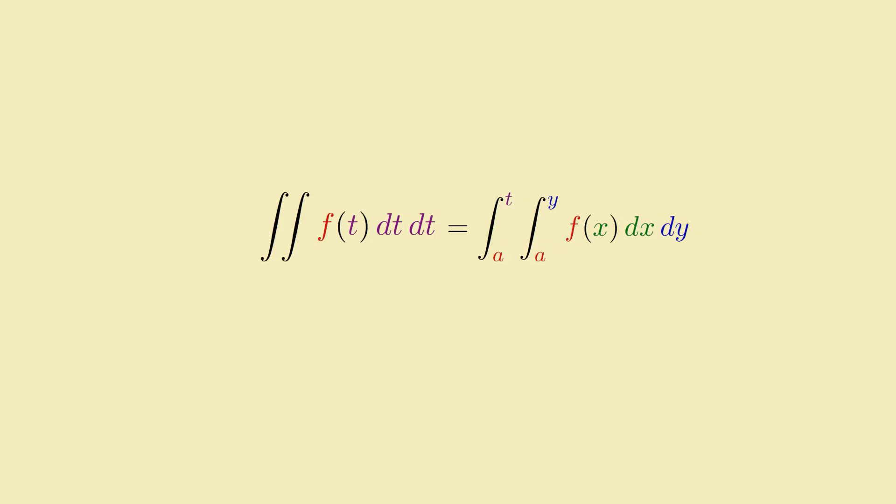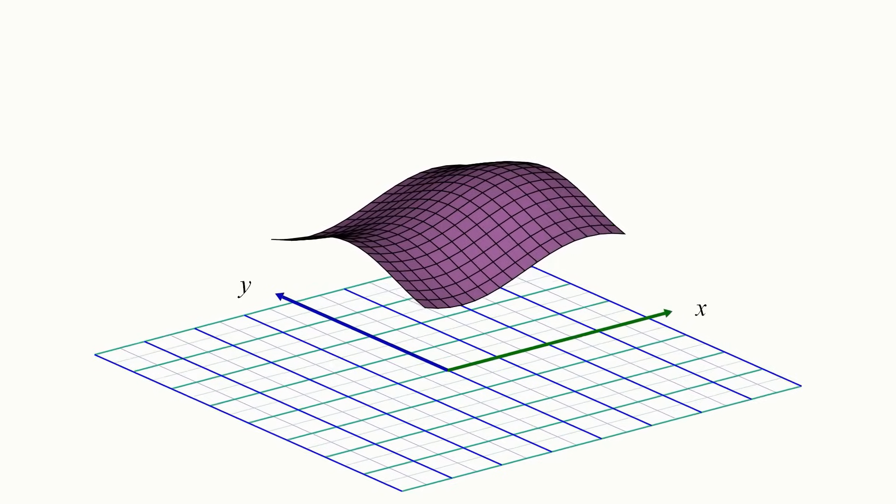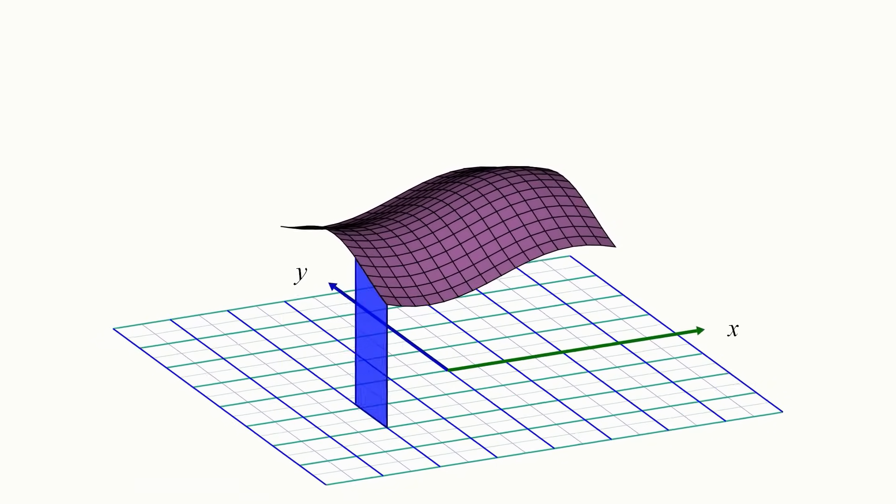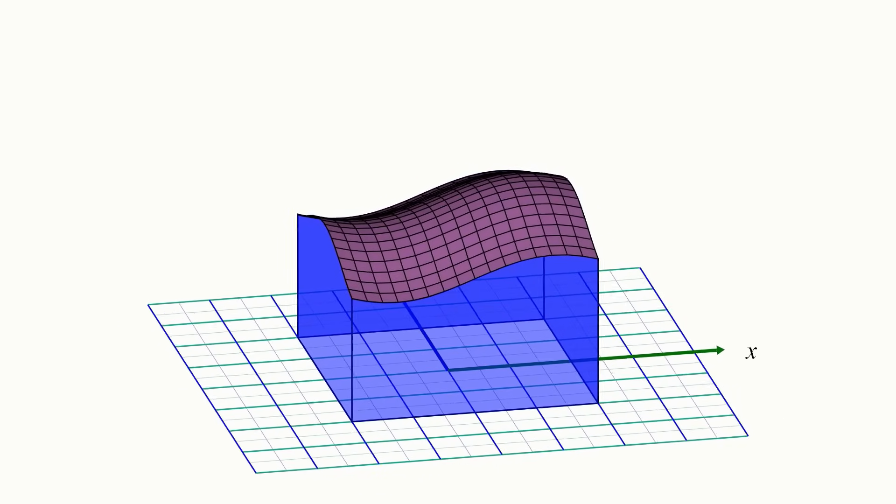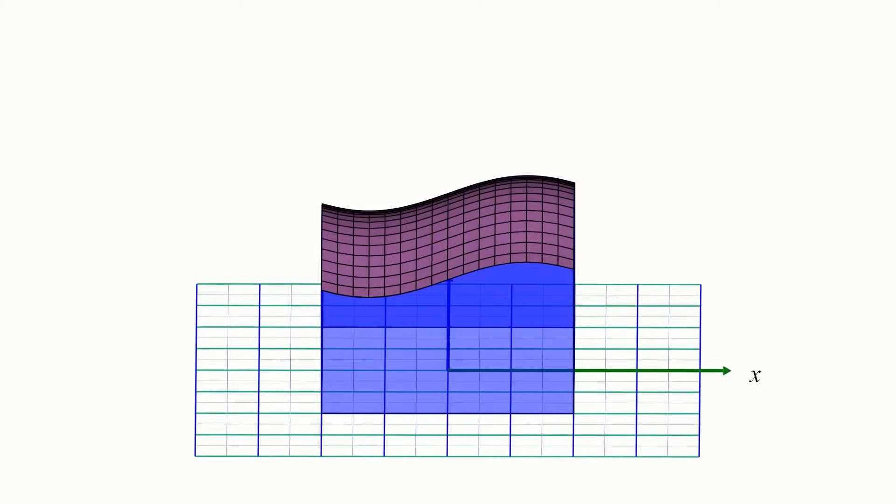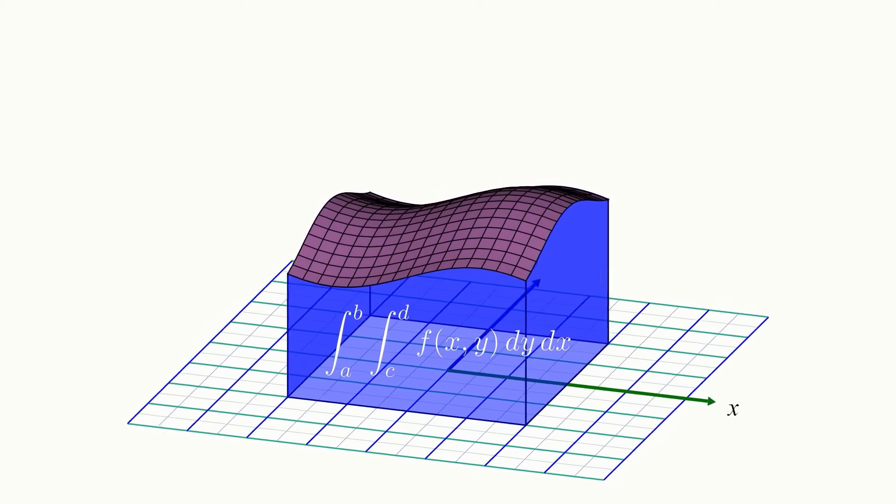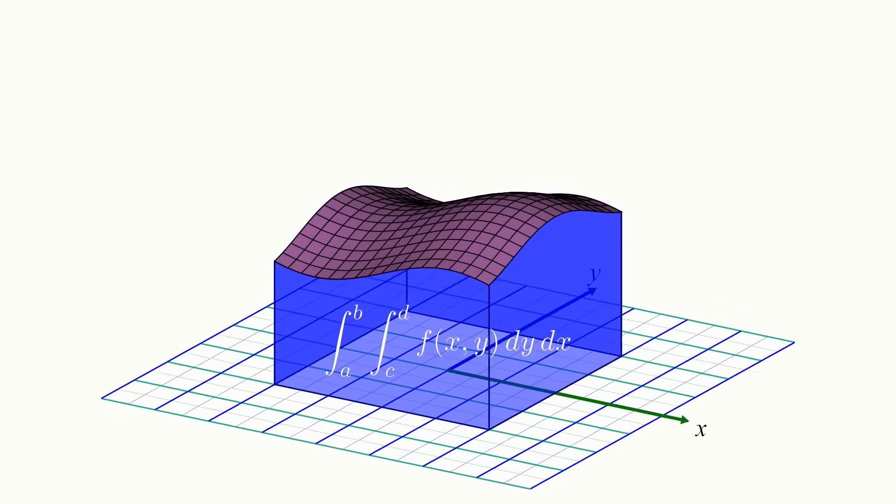Those of you who have had multivariable calculus might see where this is going. A nested double integral represents the volume of a certain three-dimensional solid. So let's see if we can visualize this solid. Now, if you haven't seen double integrals before, or would just like a refresher, I have a video on my old channel about how to interpret and set up double integrals. I'll leave a link to it in the description if you want to check it out.